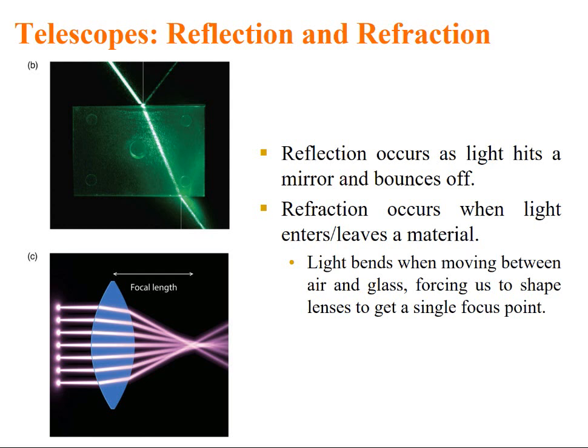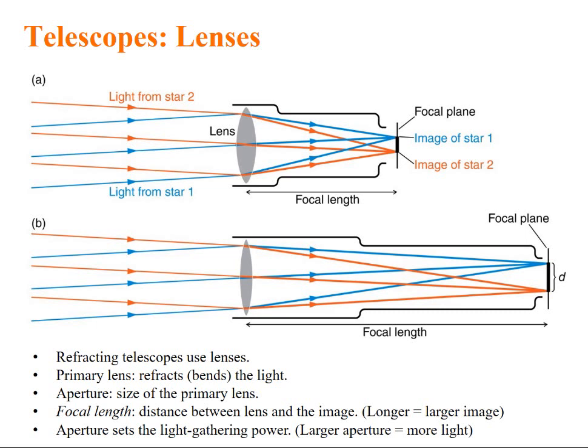Telescope is broadly classified into two according to the mode of their operation i.e. reflection and refraction. Reflection occurs as light hits a mirror and bounces off. Refraction occurs when light enters or leaves a material. When a light enters or leaves a material, the light bends and this bending causes the light to move in a different path than the original path where it was coming. This is the basic principle behind lenses and how lens is able to focus the image to a single point i.e. focal length.